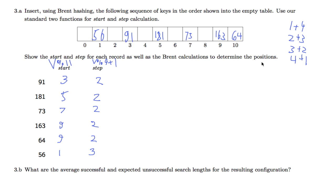Now we want to do 3b and calculate the average successful and expected unsuccessful search length for the resulting configuration. We have the configuration up here, and first let's do the average successful. The average successful means going through the elements that we put in the list and seeing how many probes they need to make in order to find them. What we see is that for 91, it's in its start place, so only one probe. Same here, only one probe. Same here, only one probe. Same in here, only one probe, because 163 is at the start place.